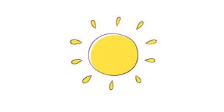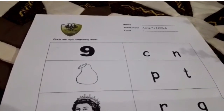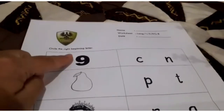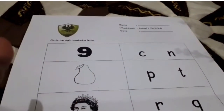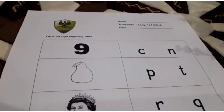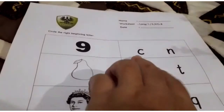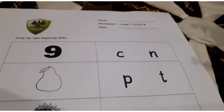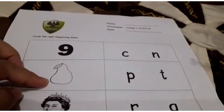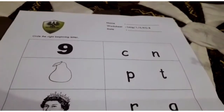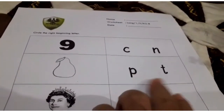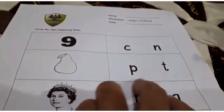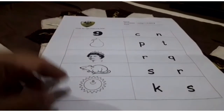So this is the worksheet. Don't forget to write down your name and the date. The instruction is to circle the right beginning letter. So this is number nine — the beginning letter is N. And this is a pair, pair — which one? P sounds — so you circle the right one.